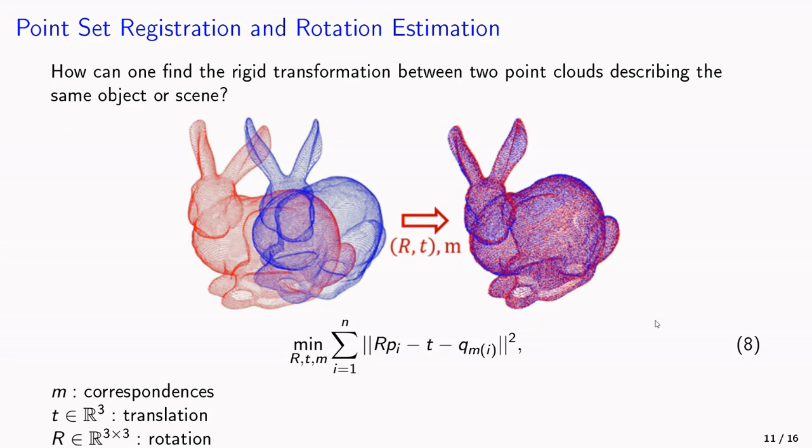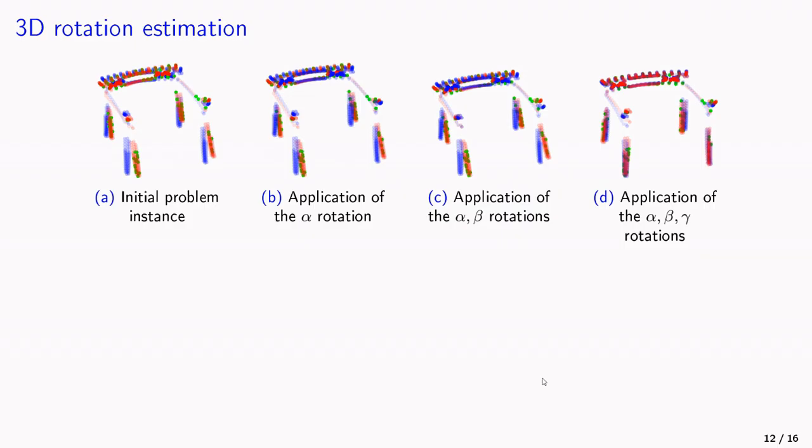Another application area is point-set registration. In point-set registration, we want to find the rotation, translation and the correspondence to build from two point clouds that depict the same object, a denser point cloud. This can be done by optimizing this optimization problem here, where we have the least square error of the distances after the rotation was applied.